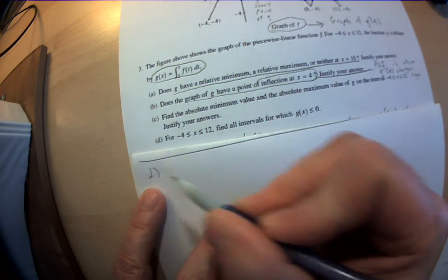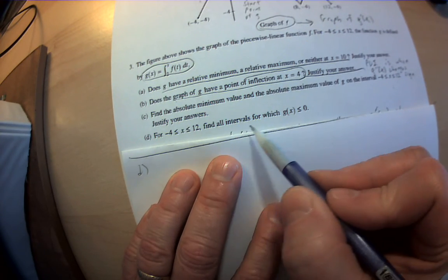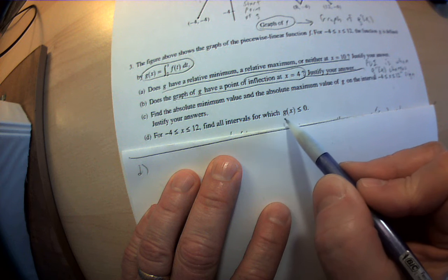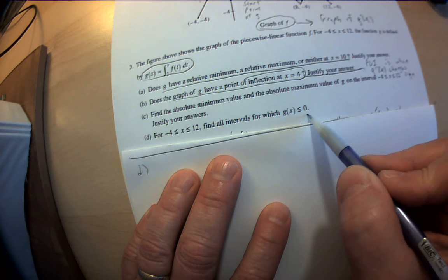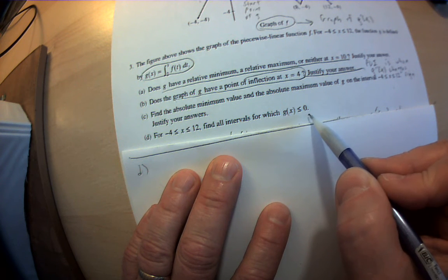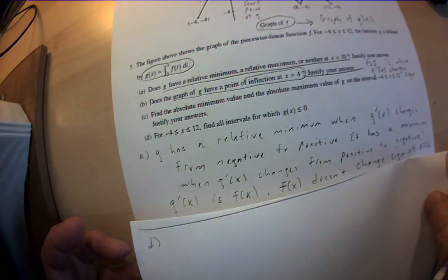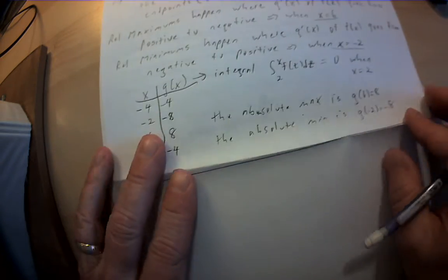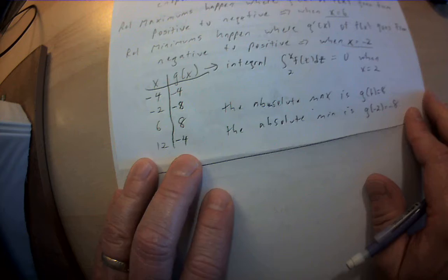Okay guys, Part D. For that interval, find all the intervals for which g of x is less than 0, less than or equal to 0. So that's the problem. I can borrow a little bit from my last thing.